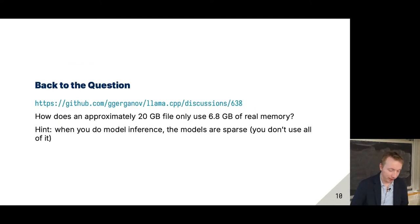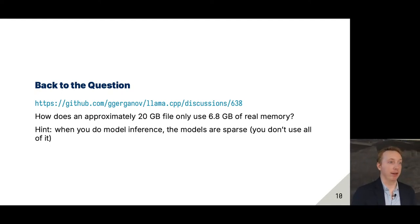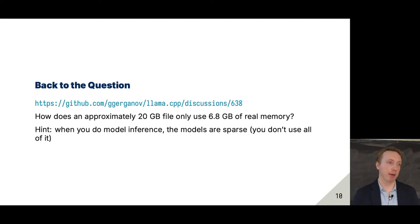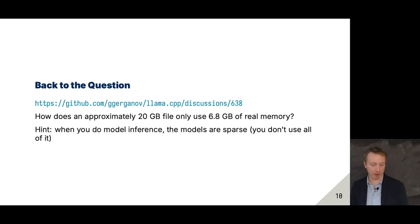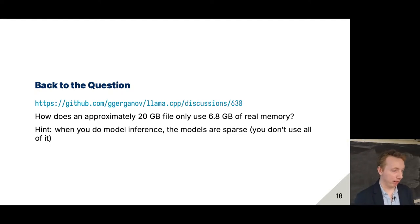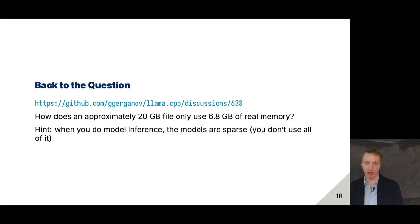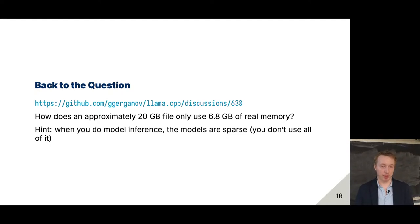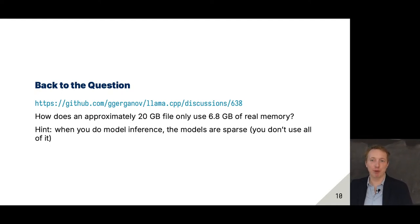Going back to that question — how is it possible that a 30-gig model only uses 5.8 or 6.8 gigs of real memory? Whoever wrote the first version loaded the entire model into memory whether or not you used it. A very smart person realized that model inference is typically sparse — you don't use all of it. Instead of reading the contents of a file you might not fully touch, they just did mmap — a one-line change from doing read system calls over and over again to a single mmap system call. That was the whole wizardry.